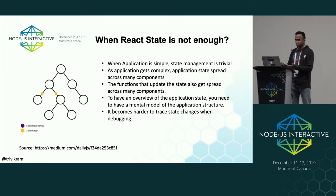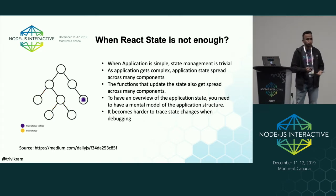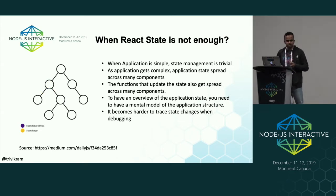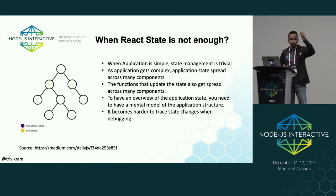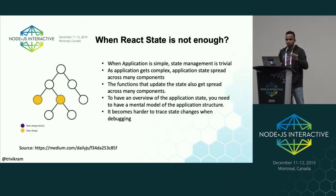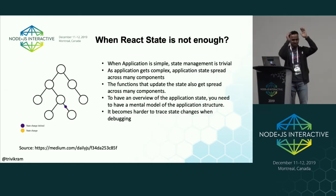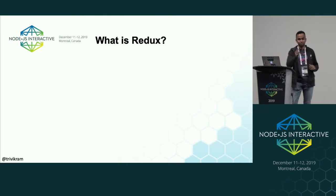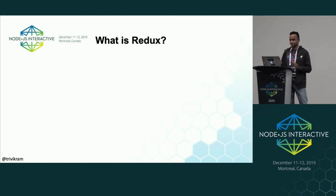It becomes harder to trace state changes when debugging. In the GIF you are seeing, the purple color change represents the state change. When a state change is initiated, it has to be populated to the parent so that it can be propagated to the children where the UI needs to change. You have to pass all this state back to the parent, pass state to props — if you use component state in a complex application, you will realize this.